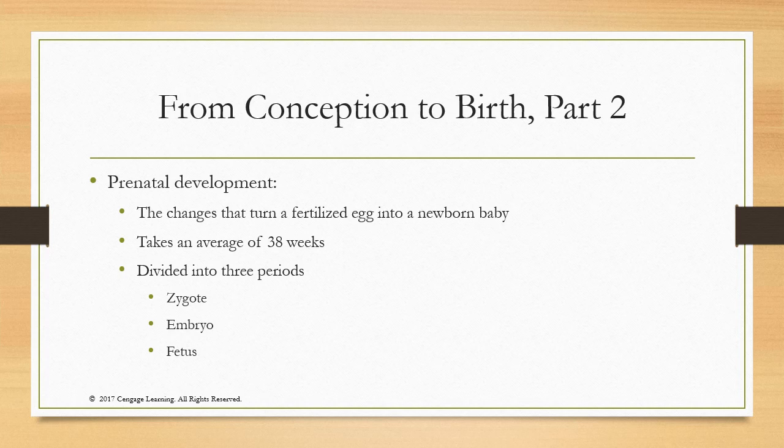Let's start with prenatal development — looking at the changes that turn a fertilized egg into a newborn baby. It takes an average of 38 weeks. Humans have a gestational period of about nine months, 38 to 40 weeks, and it's divided into three periods. This will be very important for your attendance assignment this week.